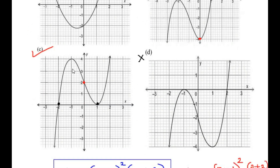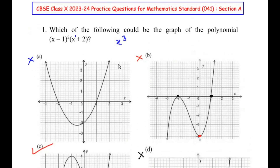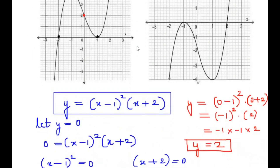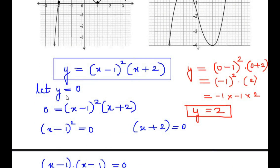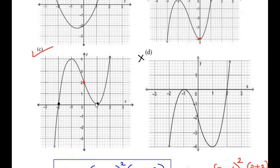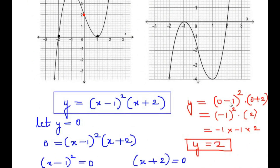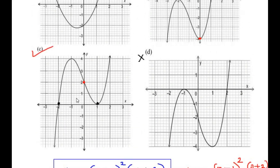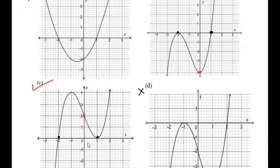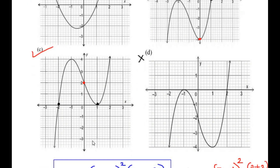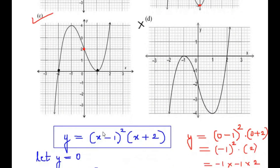This is how we find which curve represents the given polynomial: first, set y equal to 0 to get the x values, which tells us where the curve touches the x-axis. If more than one graph remains, set x equal to 0 and find the y value to identify where the curve crosses the y-axis. I hope you have understood all the steps and liked the video. Please like, share, and subscribe to my channel. Thank you for watching.